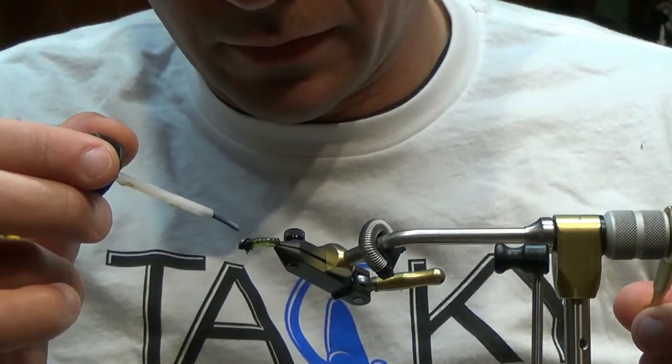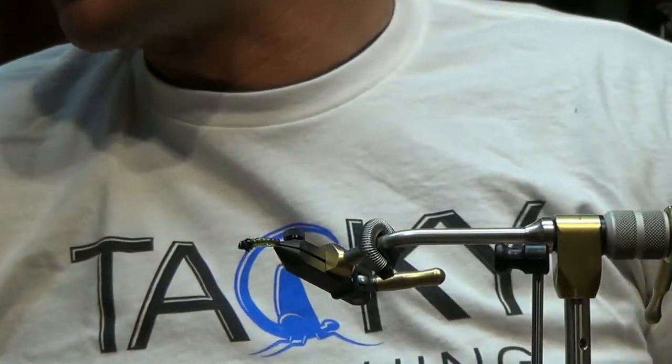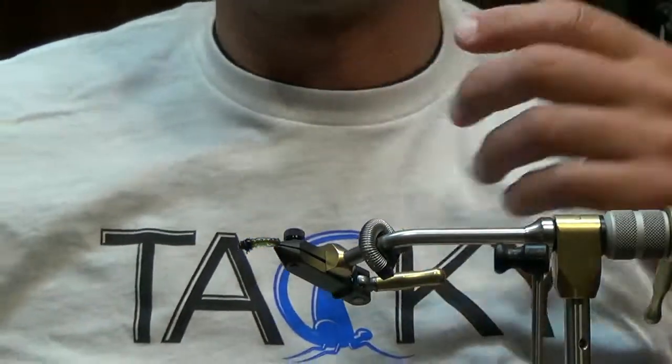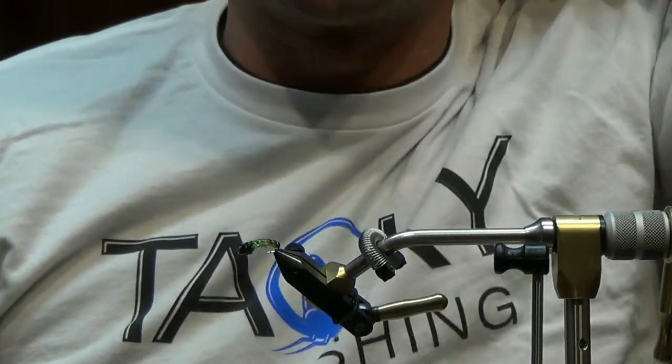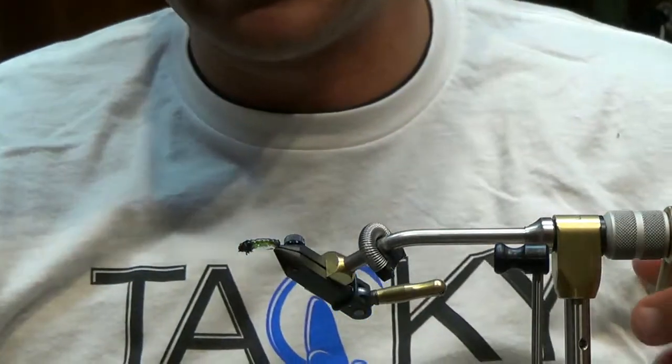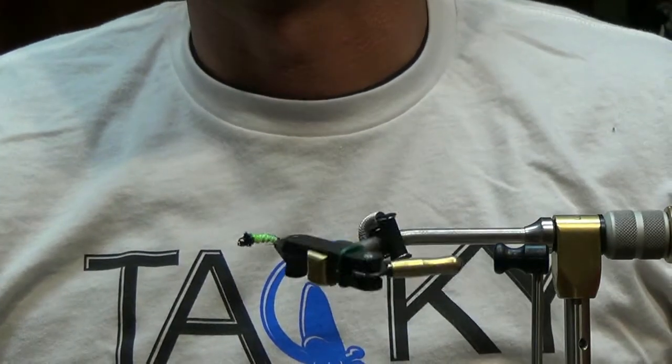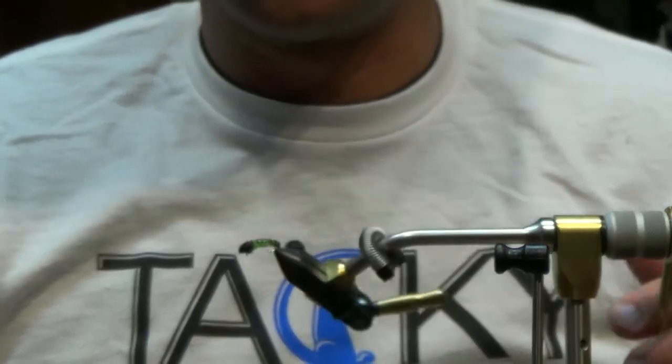Also very effective. March, April back in Pennsylvania, anytime you have caddis popping no matter where you're fishing, this is going to be an effective pattern. It's very good, easy to imitate the naturals. And there we have it, this is your granum flavored caddis larva.